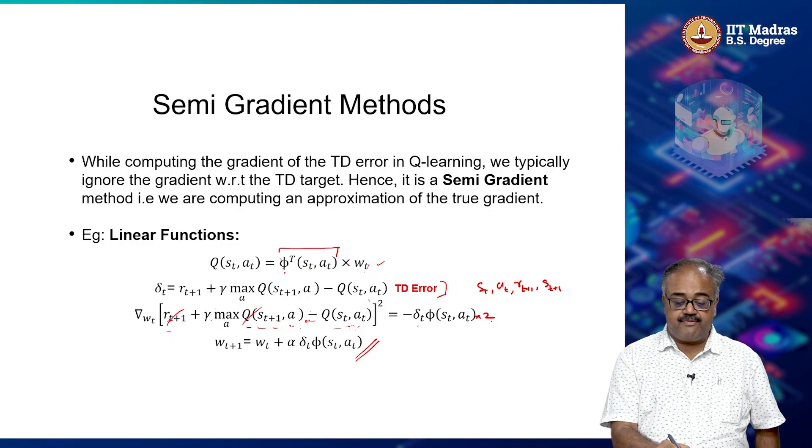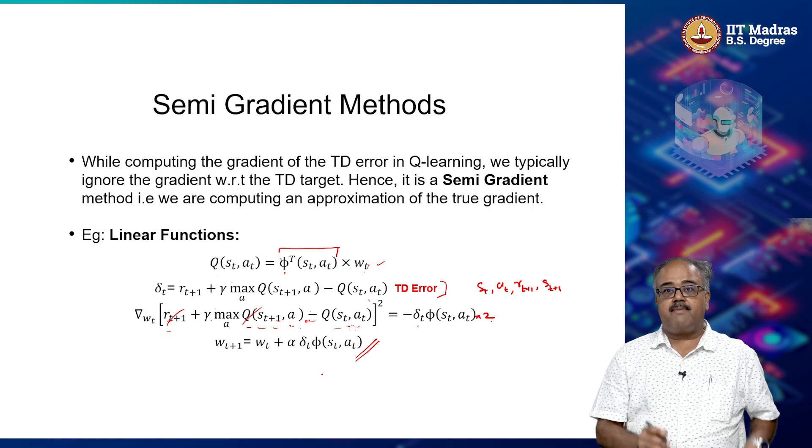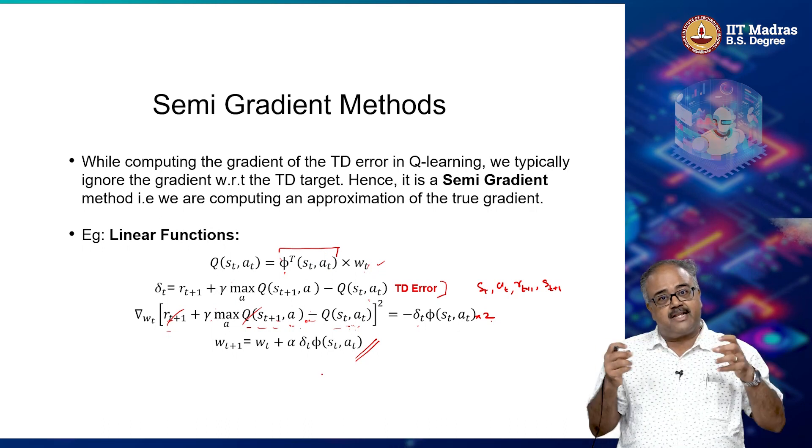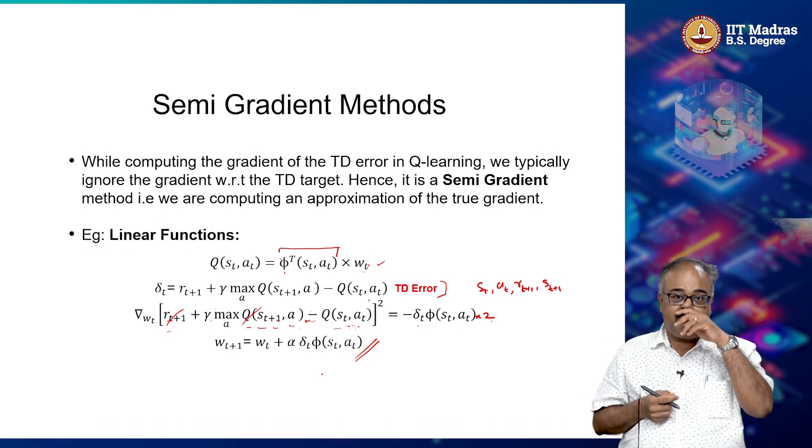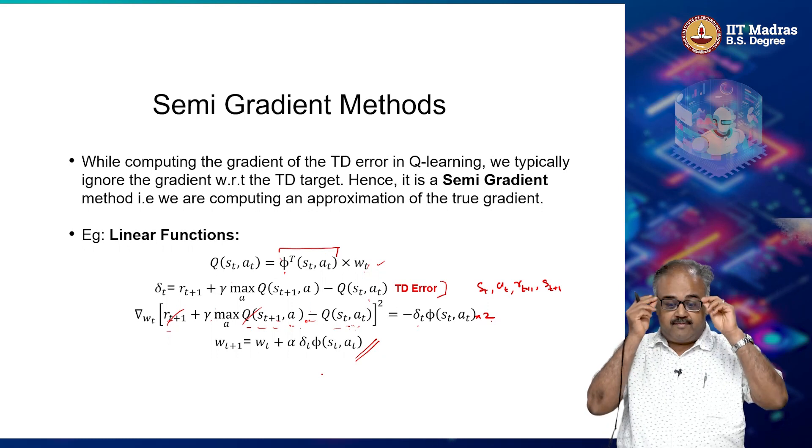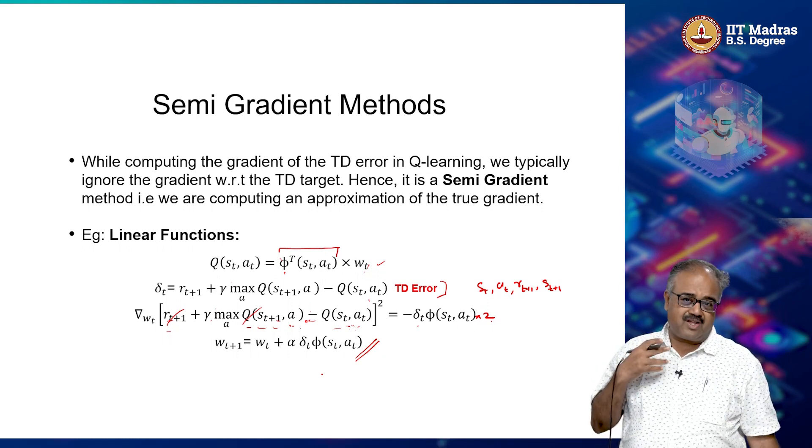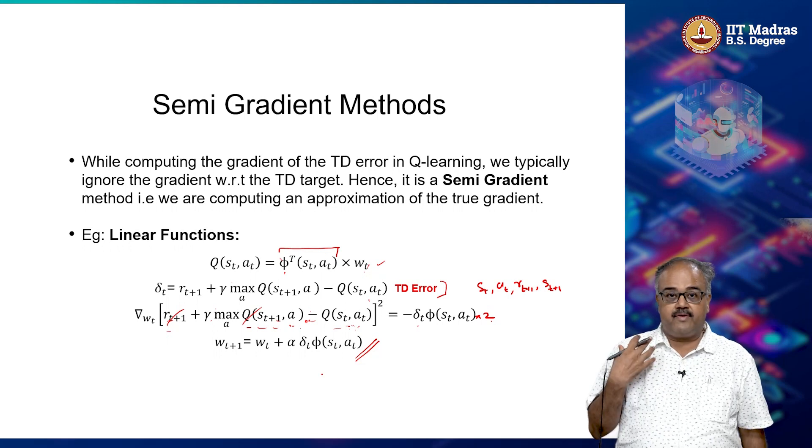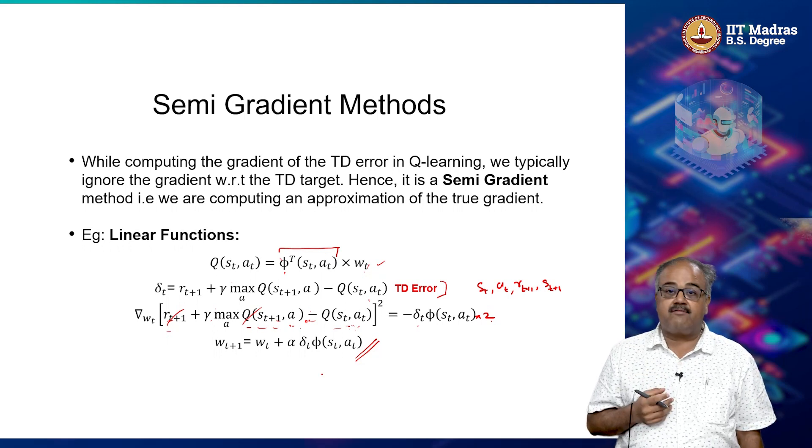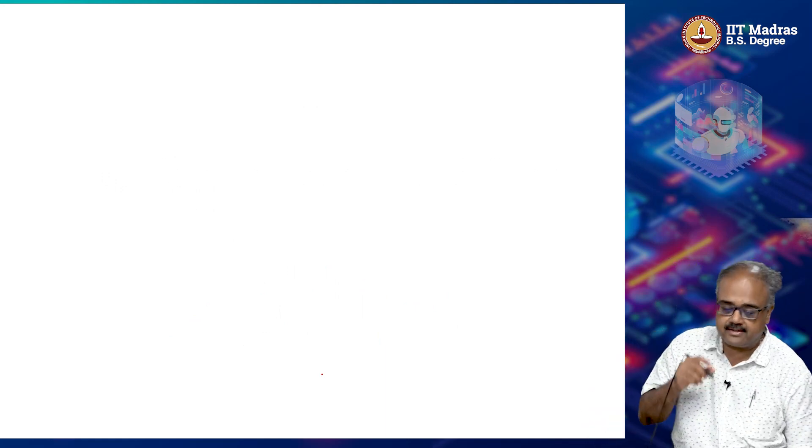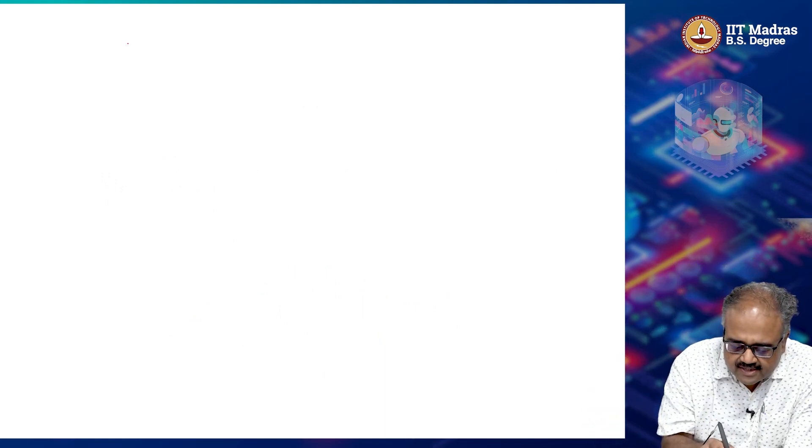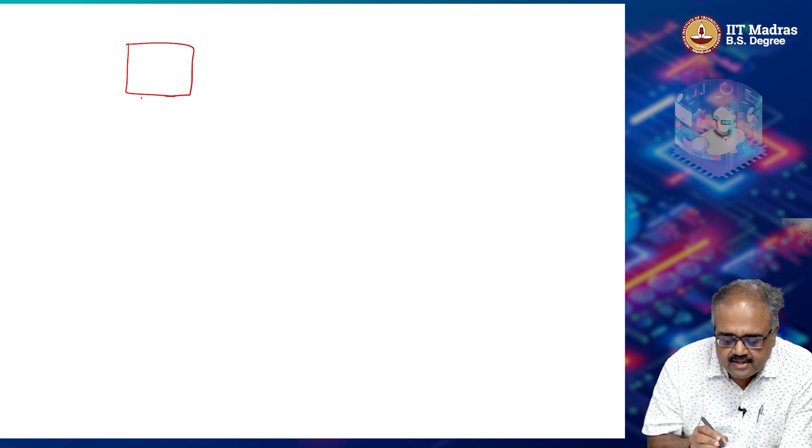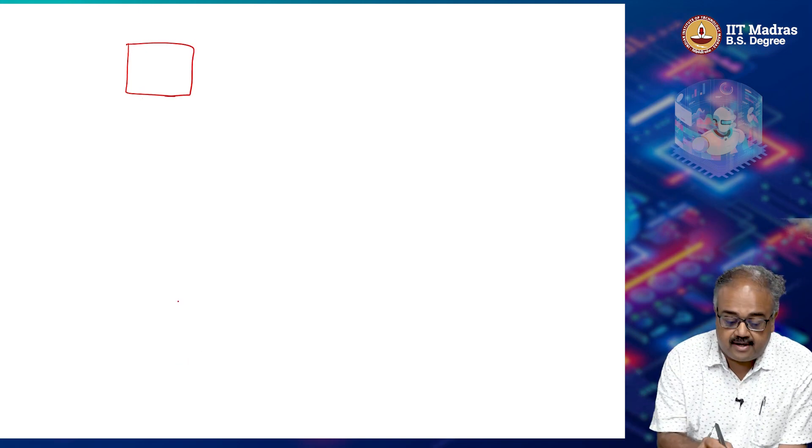Let us go back and look at this phi function. Remember I was telling you phi is some representation that you have for the states and actions. Quite often we come up with this representation through some kind of an idea about how the state looks like, the knowledge that we have about the domain. So let us take a simple look. One of the simplest things, let us say that I have my state space given by a grid like this.